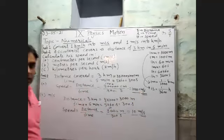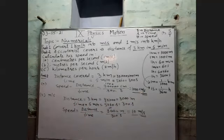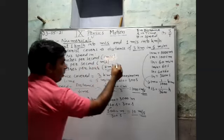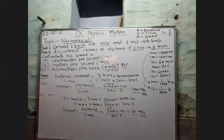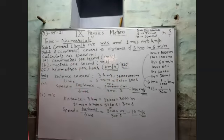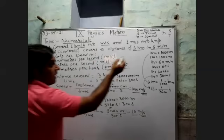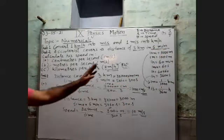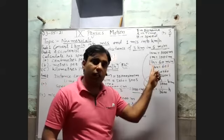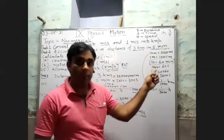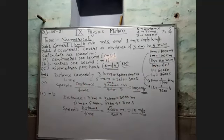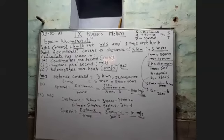The centimeter per second is the CGS system; meter per second is the SI system. Part c — kilometer per hour — is your homework. Distance is already in kilometers so no conversion needed. Convert time: five minutes equals 5 upon 60 hours. Then divide distance by time to get the result in kilometer per hour.